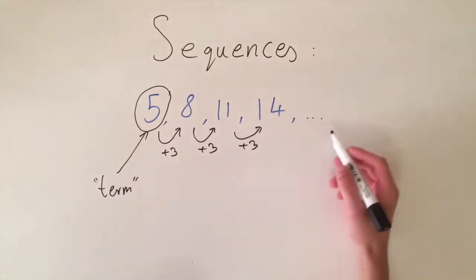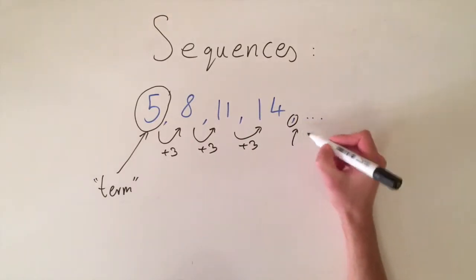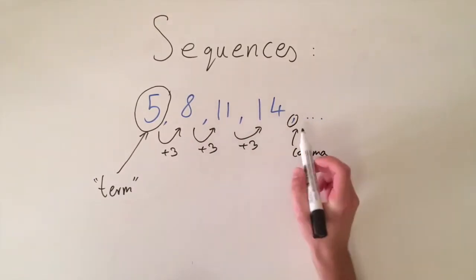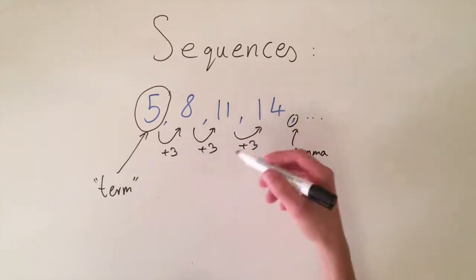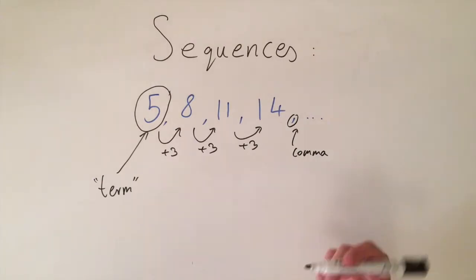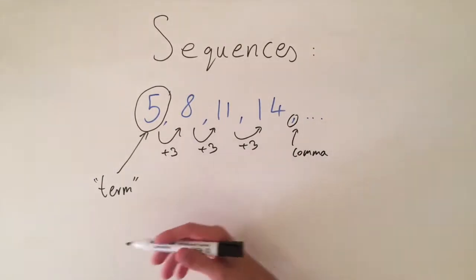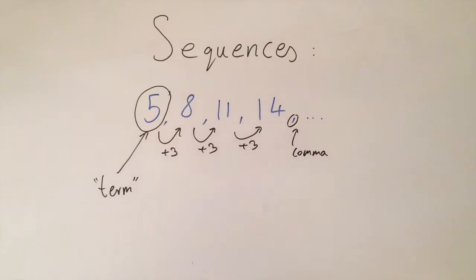And to separate the terms we just use a comma. So this is just notation and this kind of separates each term and it helps us keep track of which numbers are the terms. So now I'm going to show you a few examples and we're going to try and work out what the pattern is and what the next few terms in the sequence are.